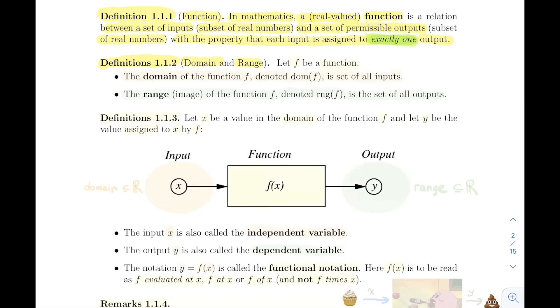So here, domain and range: the set of all possible inputs is called the domain of the function f, denoted dom(f). That's the set of all inputs - a subset of real numbers. The set of all possible outputs is called the range of that function, denoted rng(f). That's the set of all outputs.